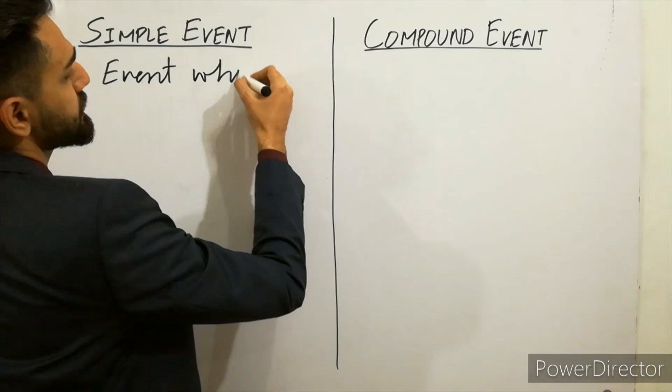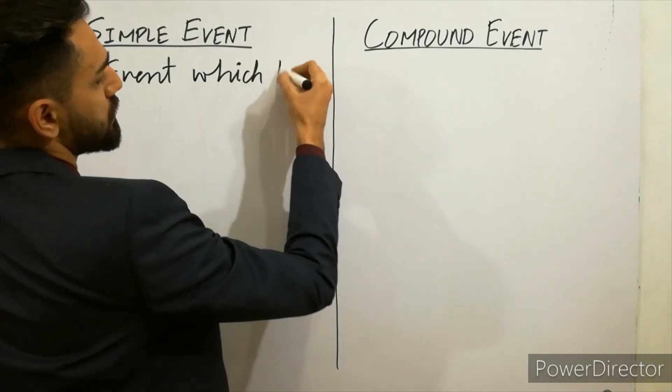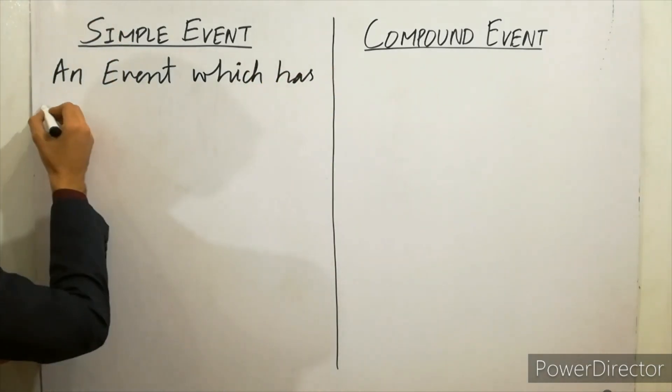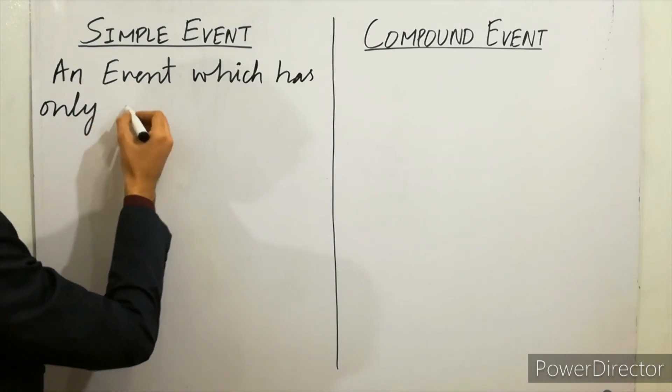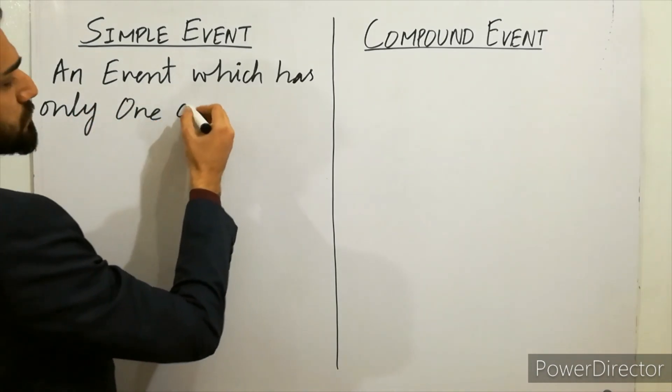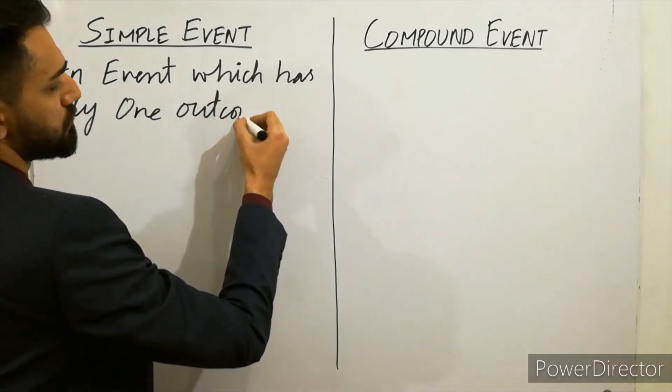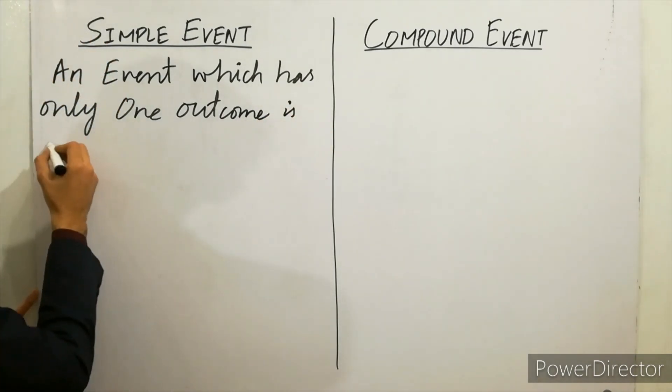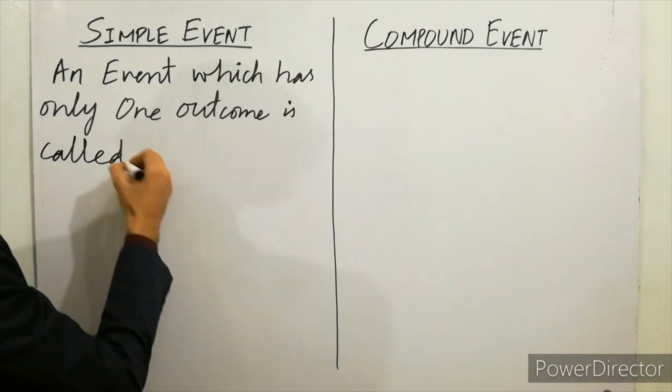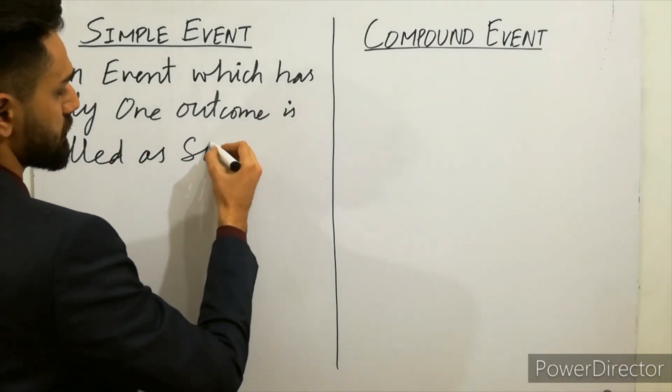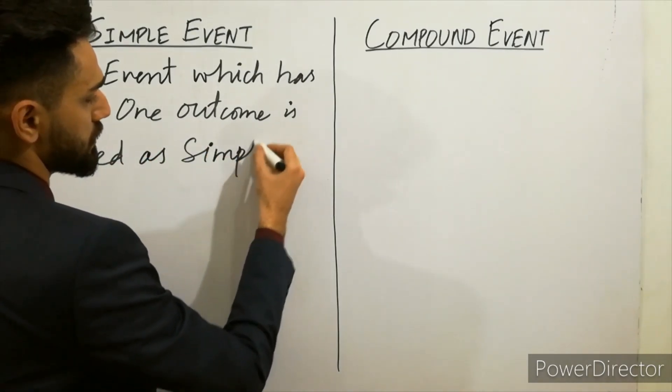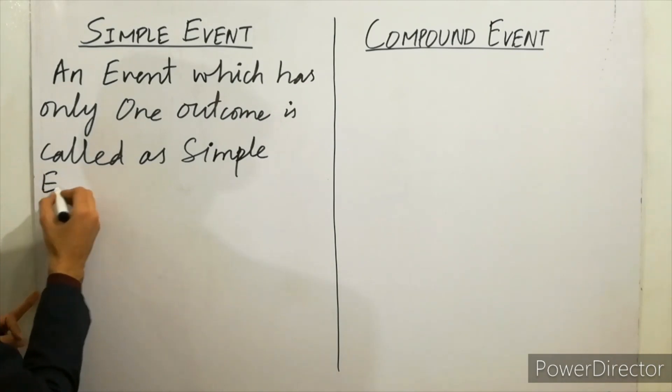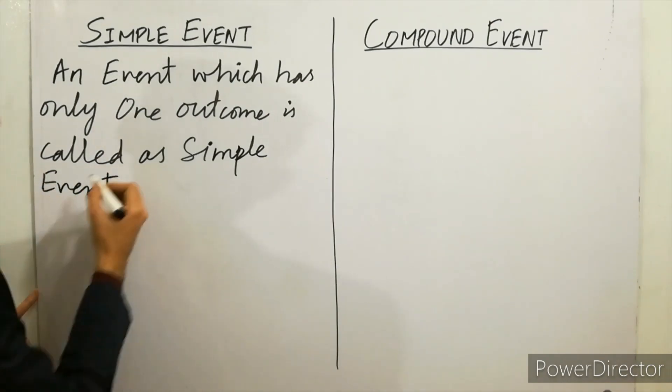which has only one outcome is called as simple event. It's called as simple event. That's simple.